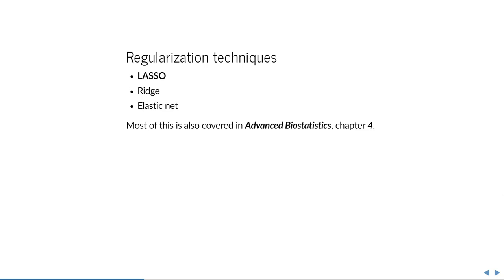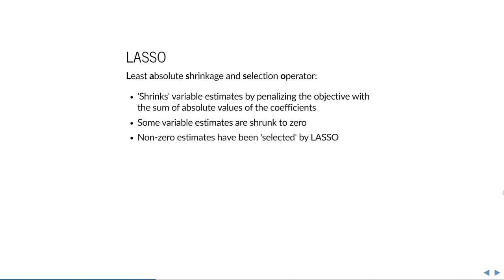Starting with lasso: it's an abbreviation standing for Least Absolute Shrinkage and Selection Operator. It works by shrinking variable estimates by penalizing the objective with the sum of absolute values of the coefficients. When this happens, some variable estimates are shrunk to zero. Whatever estimates remain that aren't zero have been selected — so lasso is a form of variable selection. Most of what I'll explain is also covered in Advanced Biostatistics chapter four, uploaded on Brightspace.